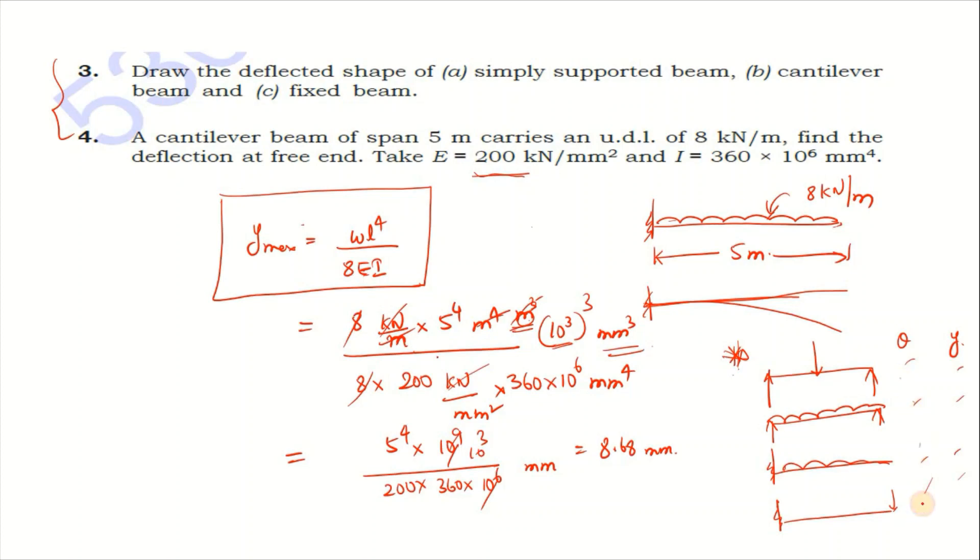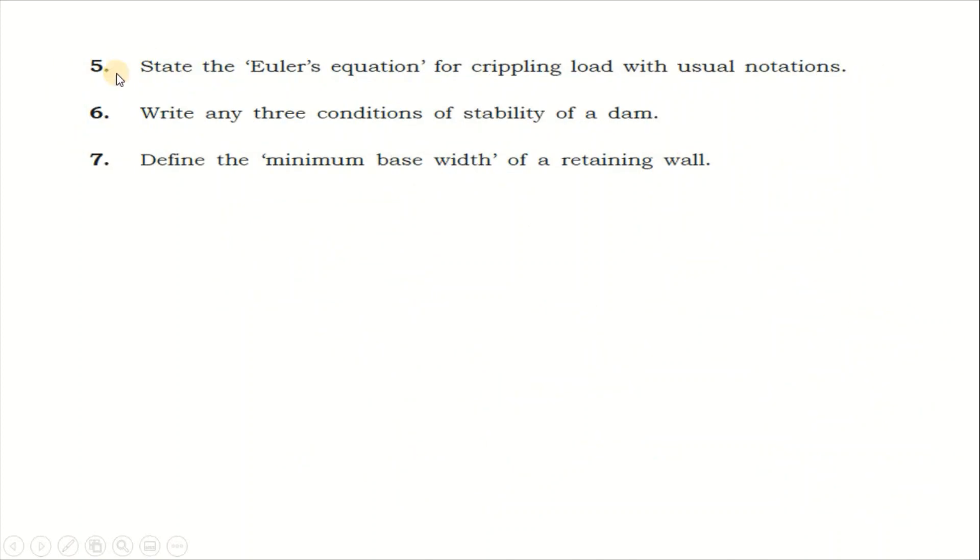State the Euler's equation for crippling load. This is from the last paper: π²EI by Le². Usual notation: EI is flexural rigidity, L is effective length.